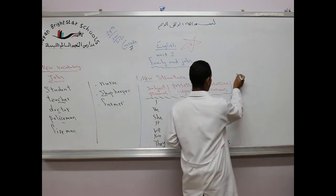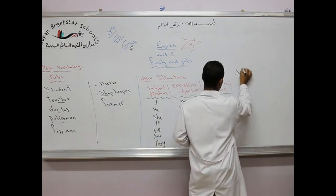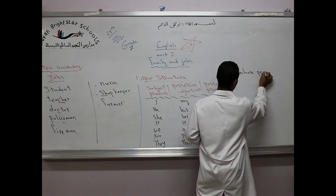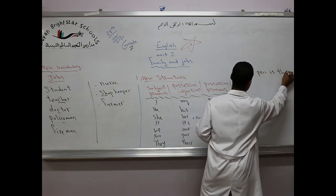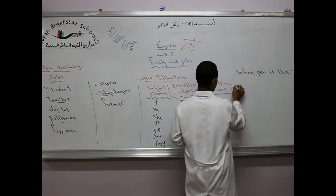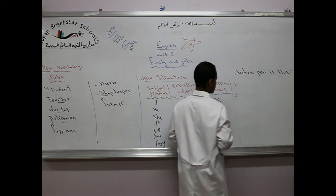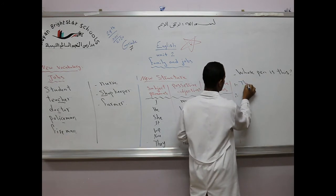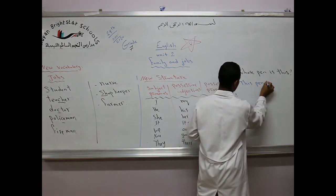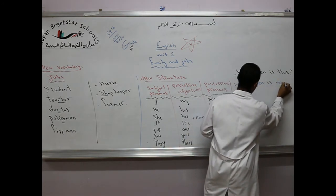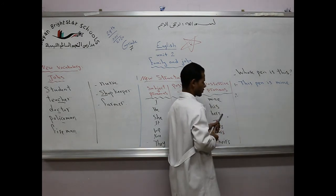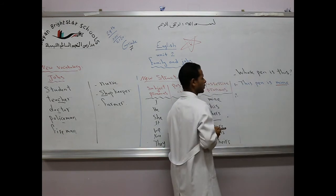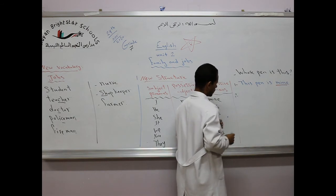So for example, we use these question words to ask about position: whose pen is this? We have two ways to answer about this question. We can say, this pen is mine. Here we use mine at the end of the sentence.